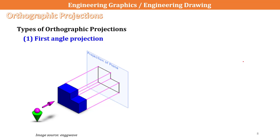In the US, the UK, and other countries, they use third angle projection. The first angle is the first angle, and the third angle is the third angle.